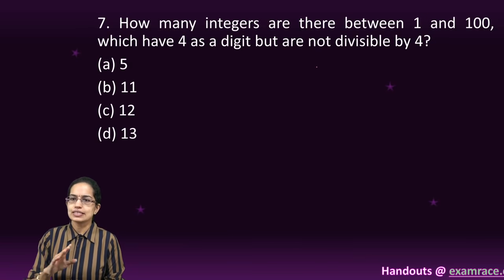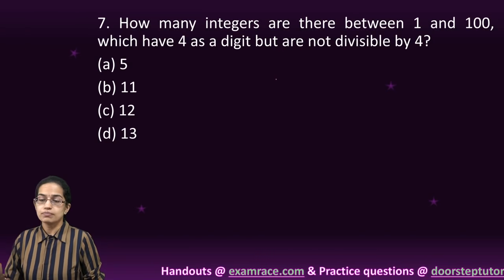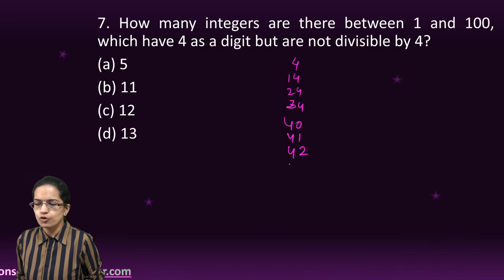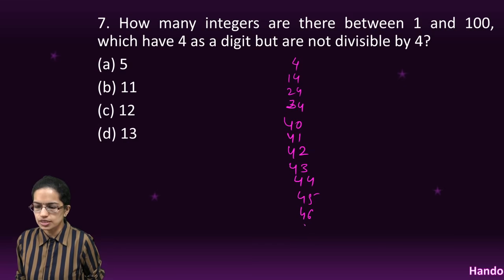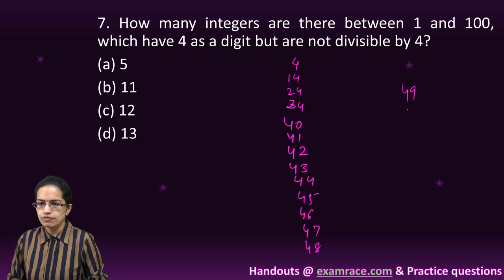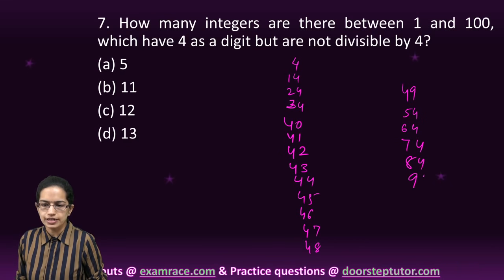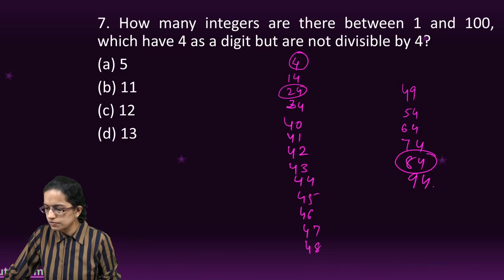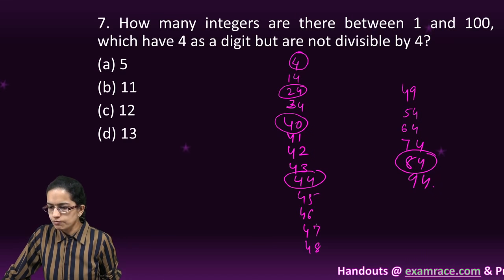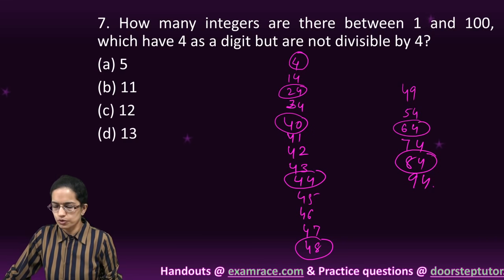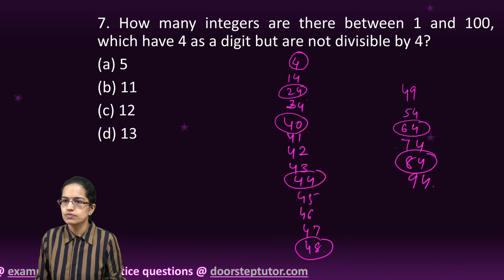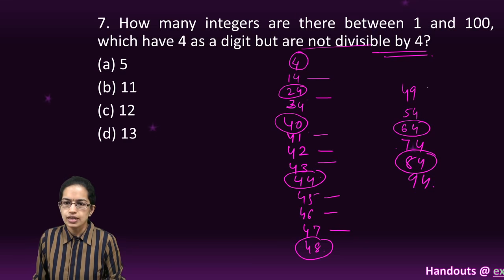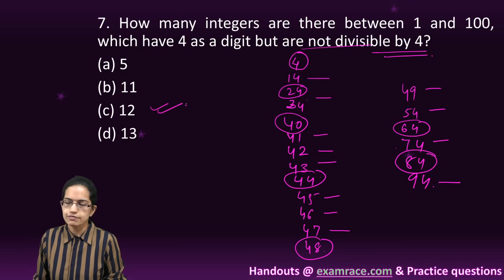The next question: how many integers are there between 1 and 100 which have 4 as a digit but are not divisible by 4? I write 4, 14, 24, 34, then all numbers from 40 onwards: 40, 44, 45, 46, 47, 48, 49, then 54, 64, 74, 84, and 94. Out of these, I mark which are divisible by 4: 84, 4, 24, 40, 44, 48, and 64. That's seven numbers divisible by 4. The remaining ones are not divisible, which gives us 12 numbers.